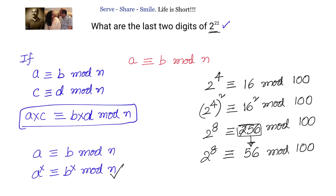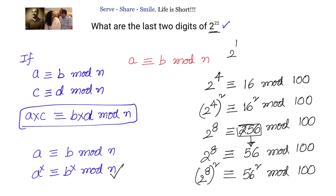Then we square again. We have 2 power 8 whole squared congruent to 56 squared modulo 100. That is, 2 power 16 and 56 squared, which is 3136, both leave the same remainder when divided by 100.